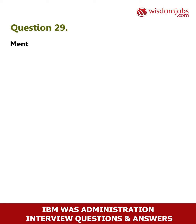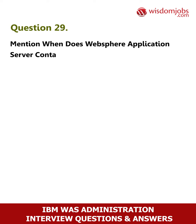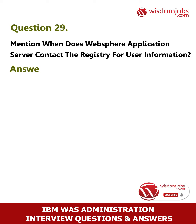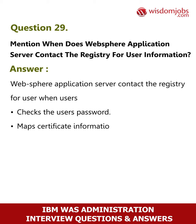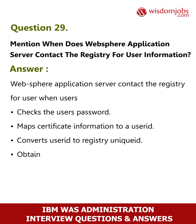Question 29: Mention when does the WebSphere Application Server contact the registry for user information. Answer: WebSphere Application Server contacts the registry when it checks the user's password, maps certificate information to a user ID, converts a user ID to a registry unique ID, or obtains group information.